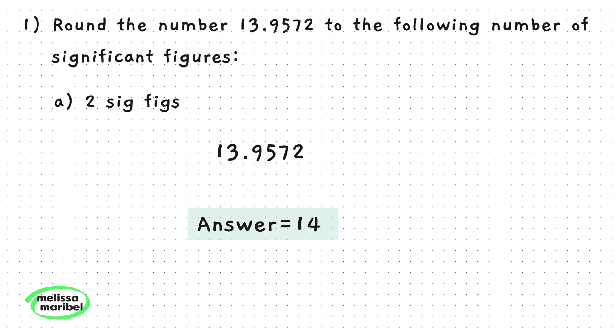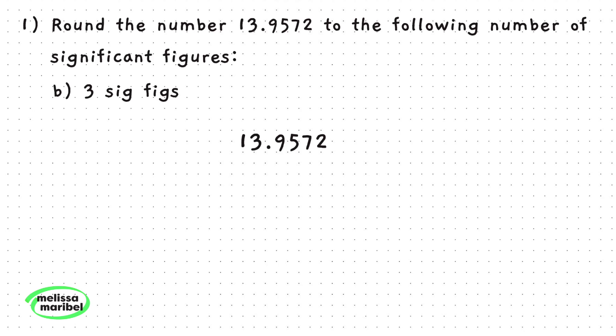Part B wants this number rounded to three significant figures, so we would stop at the 9. Next look at the number to the right of 9, which is 5, and we will round up to 14.0. We cannot just leave this as 14, since that would have just been two sig figs, so that's why we have to include the 0 here to make this have three sig figs.